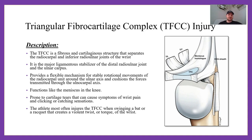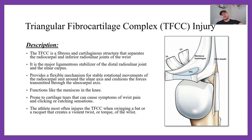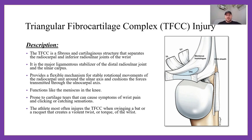The TFCC functions much like the meniscus in the knee. It's prone to cartilage tears and can cause symptoms of wrist pain and a clicking or catching sensation. Athletes are most often the ones who injure this, usually through high torques or twisting from swinging bats or rackets — anything with high rotational forces under load. Just as the knee can sustain a sheared meniscus from a twisting injury, the same thing can happen here to the TFCC.